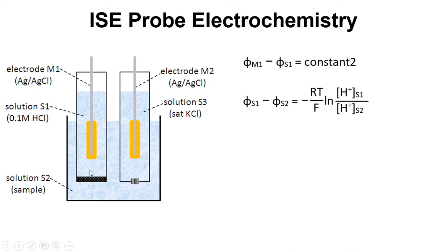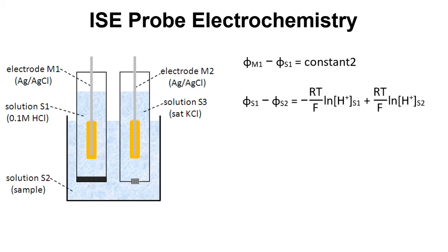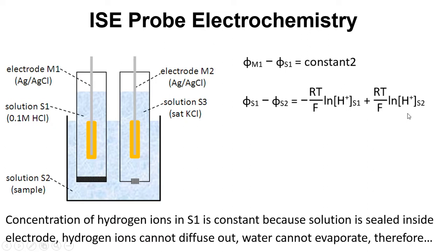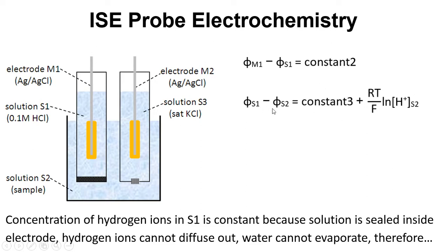The potential difference over the membrane, phi_S1 minus phi_S2, equals minus RT over F times the log of the hydrogen ion concentration in solution S1 divided by the hydrogen ion concentration in solution S2. Writing this out using the properties of logs, we separate the two concentrations. The hydrogen ion concentration in S1 is constant because the solution is sealed inside the electrode — hydrogen ions can't diffuse out and water can't evaporate. So that term becomes a fixed number, and we can write: phi_S1 minus phi_S2 equals constant 3 plus RT over F times the log of the hydrogen ion concentration in S2, the sample solution.